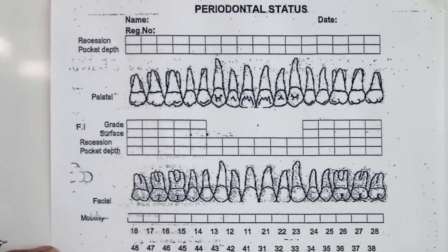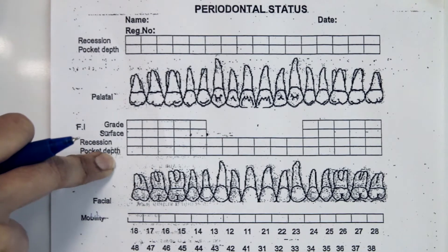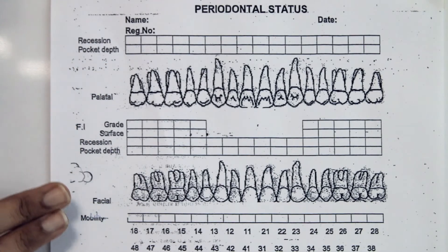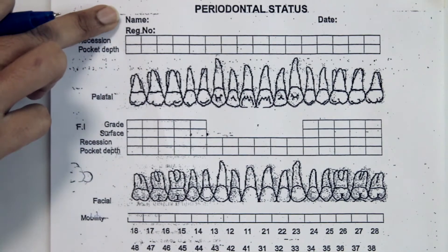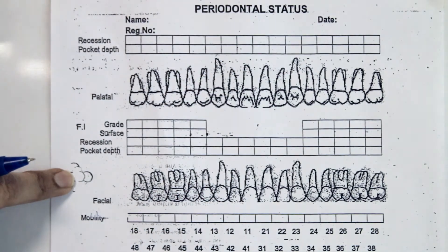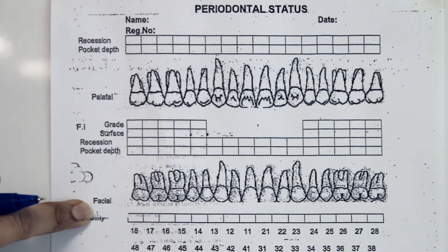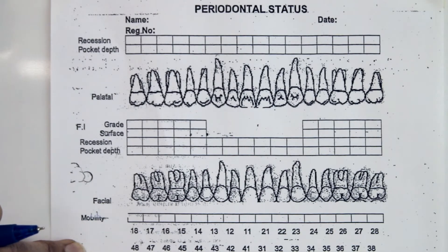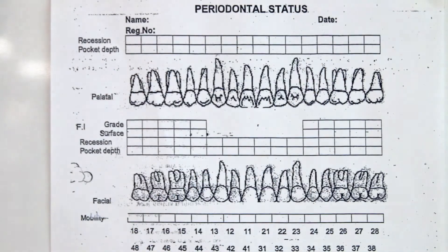Full mouth plaque score and full mouth bleeding score can also be entered in the periodontal charting form. Before entering any details, it is very important to record the patient's name, ID or registration number, and the date when the periodontal charting is being recorded. Periodontal assessment can be done not only at the initial visit but also reviewed at a later date after treatment to see how much improvement has occurred, so always record the date.